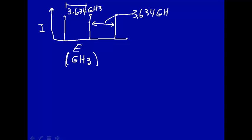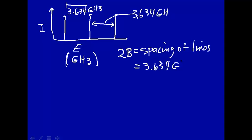From this data, can we determine the spectroscopic constant? The answer is yes. The spectroscopic constant, recall, is B. 2B is equal to the spacing between the lines, and the spacing here is 3.634 gigahertz.